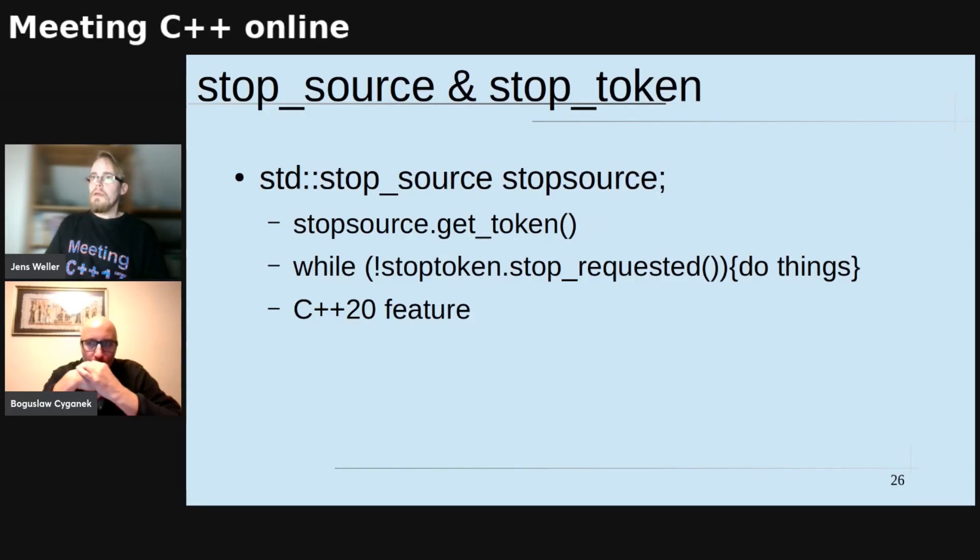So then there's actually in C++20 a nice feature, which is stop source and stop token. You create in your thread pool a stop source, and then with get token you get the stop token, and in the thread itself you can then do a loop which always queries if the thread was requested to stop from outside. So we have a synchronization mechanism which is only for stopping, which is nice. I would love to have a similar mechanism for exchanging values or something, but that's right now what we have, and that's very nice.